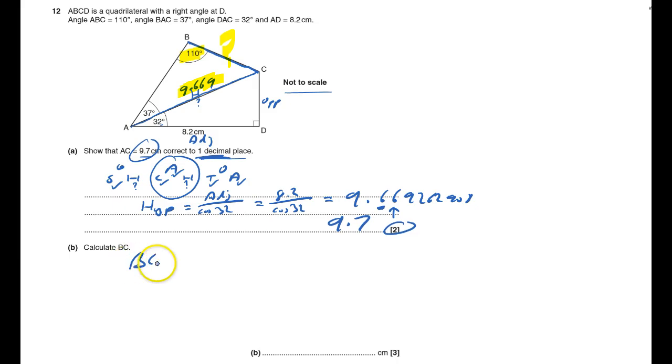So I'm going to put down BC, that's what it is. I'm trying to find BC over sine of the angle, which relates that, which is 37, equals, and I've got to put the other pair, so that's going to be 9.669 divided by sine of 110. I need to get what BC equals, so BC will equal this fraction here: 9.669 divided by sine 110, times by sine 37. Basically, I'm multiplying both sides by sine 37. That'll vaporize it from the left-hand side and put it over here.